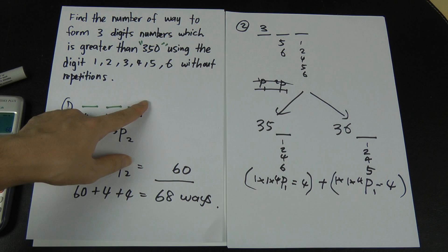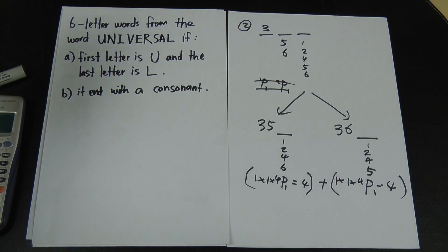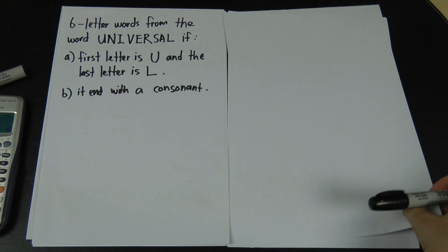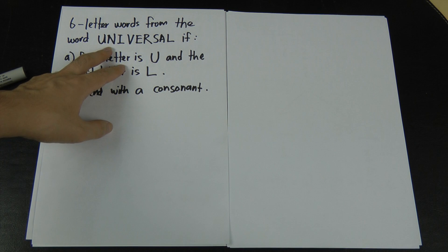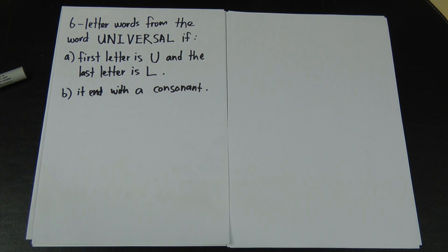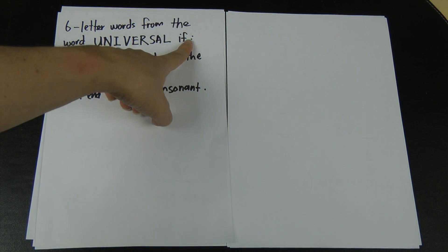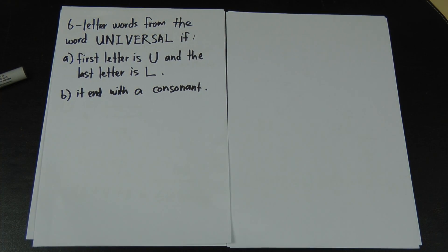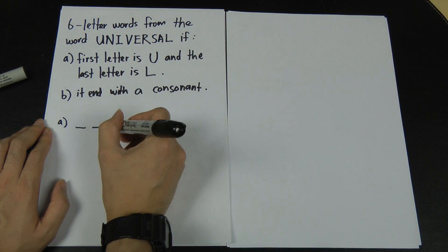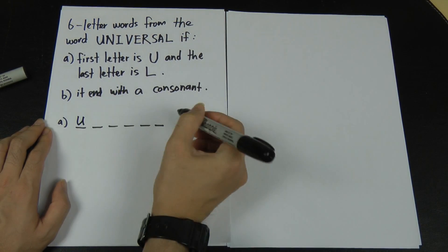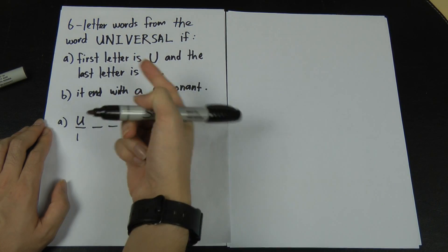Now let's look at another example. The question asks: how many 6-letter words can be formed from the word UNIVERSAL? UNIVERSAL has 9 letters. Parts A and B are two separate questions. For Part A, the first letter must be U and the last letter must be L. So I want to form a 6-letter word where position 1 is U and position 6 is L.